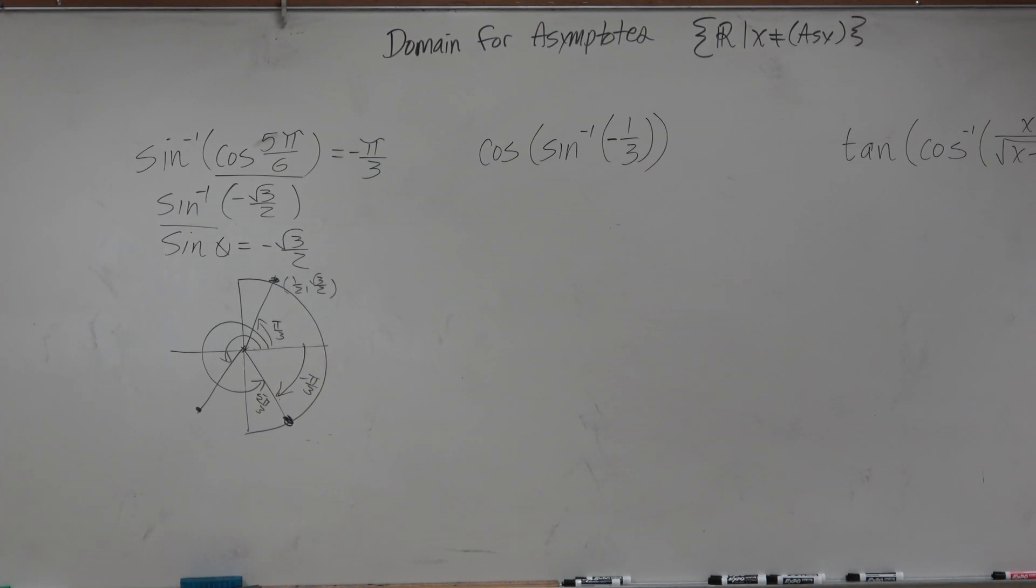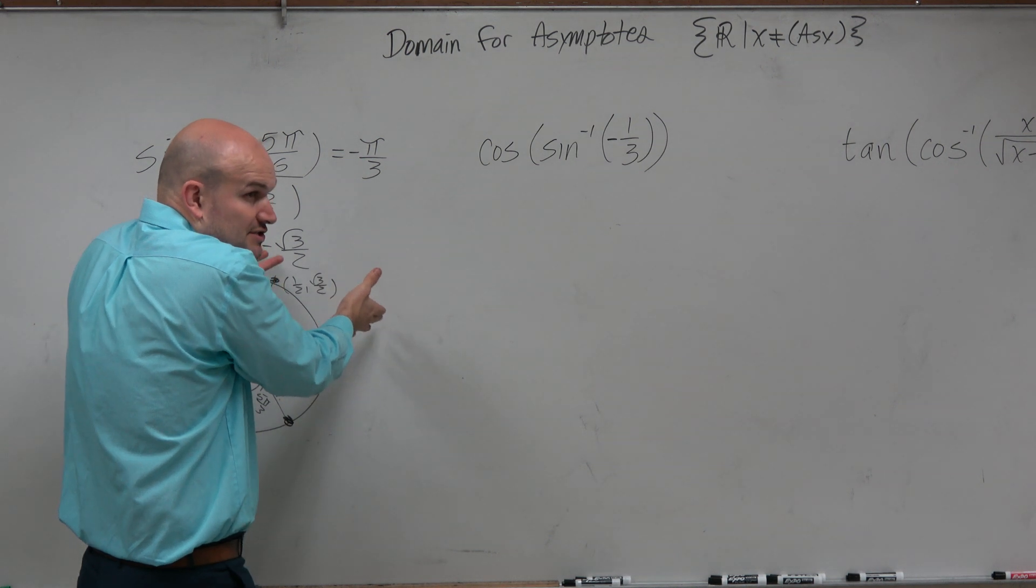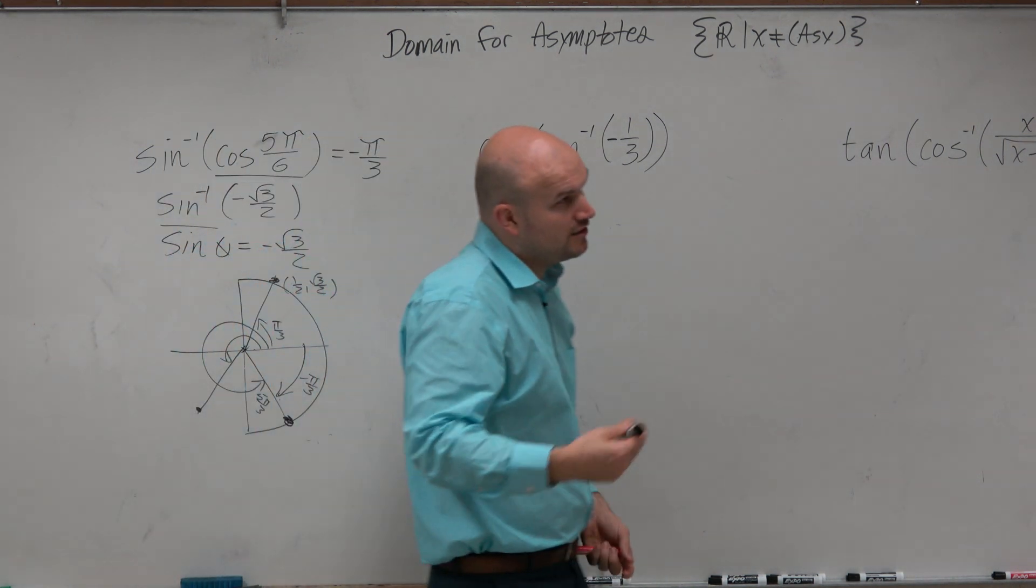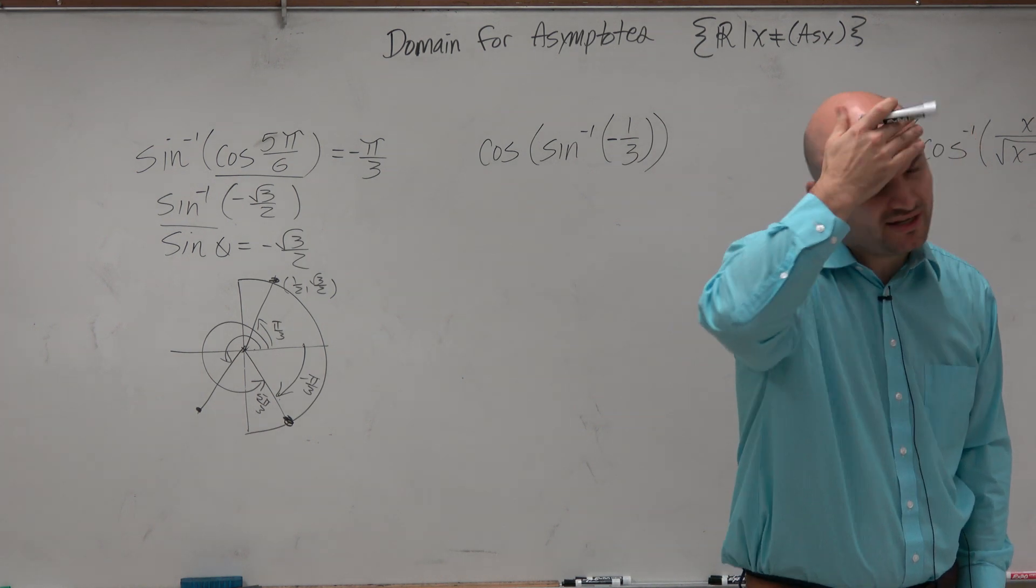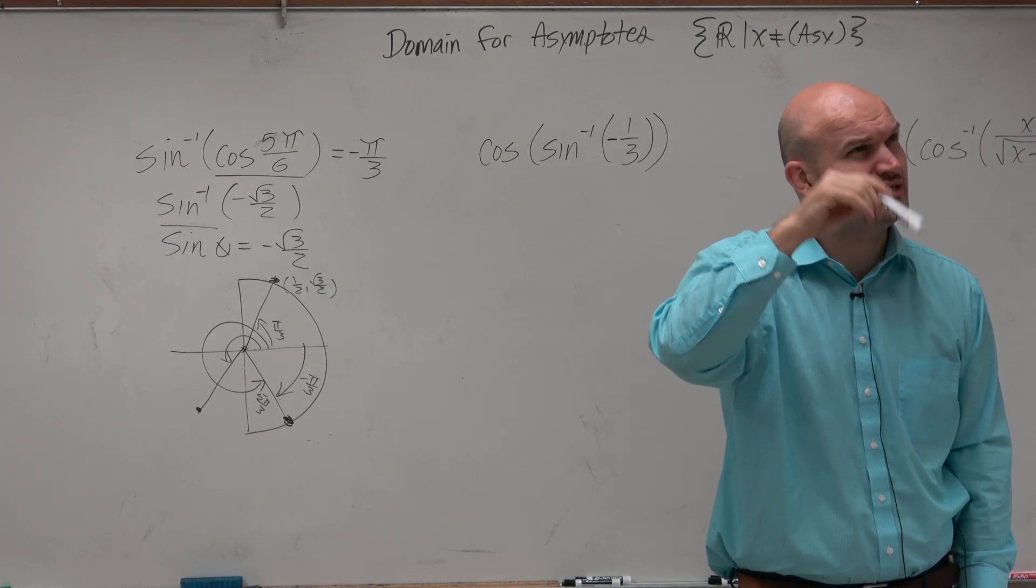Think about this in terms of the unit circle. Because so far, we just did a problem like this with the unit circle. I look at this and I say, OK, what angle gives me negative 1/3rd for sine?